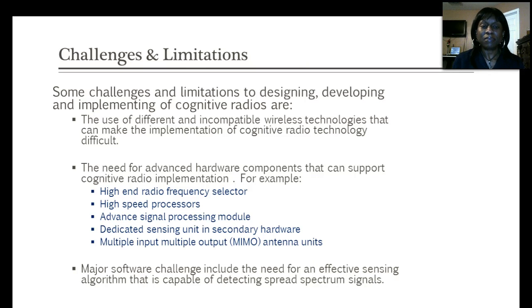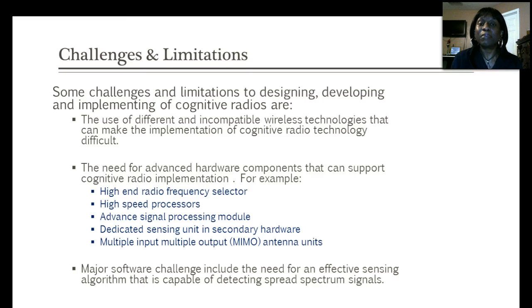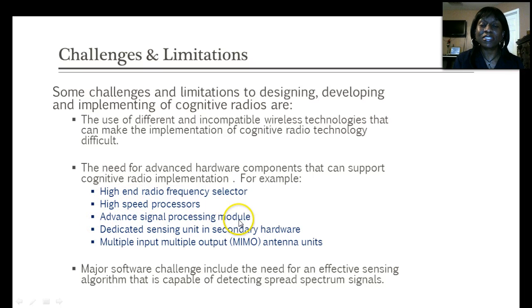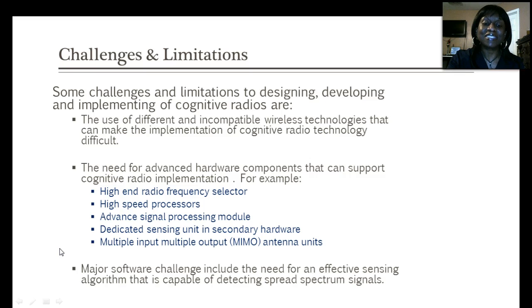As with any technology, there are challenges and limitations. Some challenges to designing and implementing cognitive radio include the fact that there are different and incompatible wireless technologies that make implementation difficult. There is also a need for advanced hardware components such as high-end radio frequency selectors, high-speed processors, advanced signal processing modules, dedicated sensing units in secondary hardware, as well as multi-in multi-out antenna units. Another challenge is the need for an effective sensing algorithm capable of detecting spread spectrum signals.